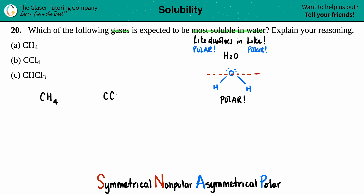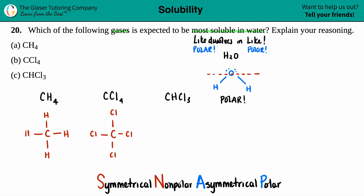We can draw the Lewis structures for CH4, CCl4, and CHCl3 to see which are symmetrical and which is asymmetrical. For CH4: carbon in the middle surrounded by four hydrogens, all single bonds. For CCl4: carbon in the middle surrounded by four chlorines, with six dots on each chlorine to satisfy the octet. For CHCl3: carbon in the middle surrounded by three chlorines - again with six dots each - and one hydrogen, which only has the one bond.